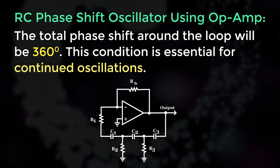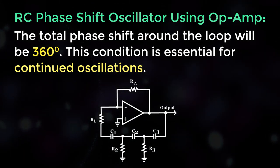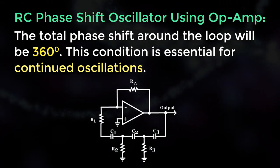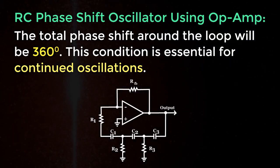The op-amp is connected as an inverting amplifier so the total phase shift around the loop will be 360 degrees. This condition is essential for continued oscillation.